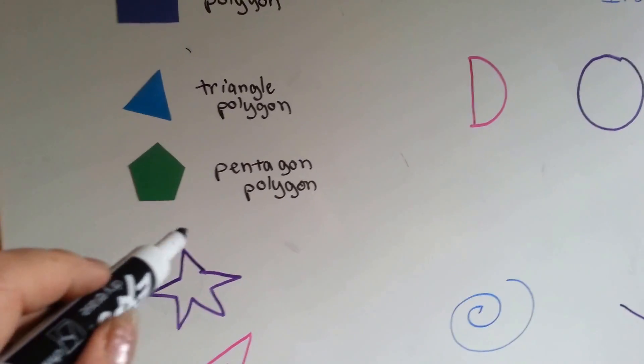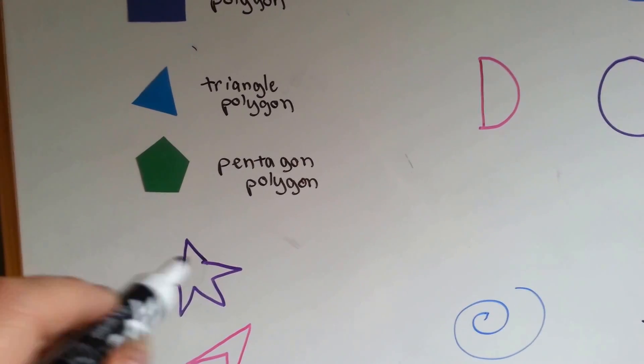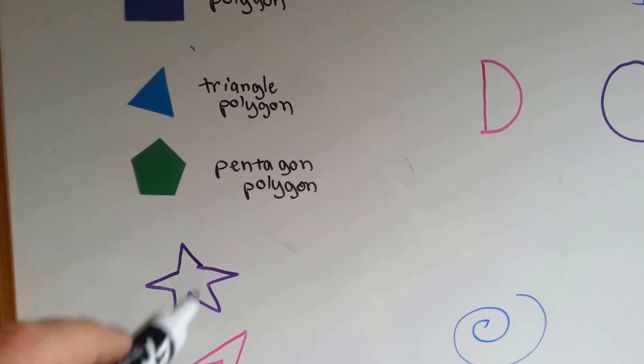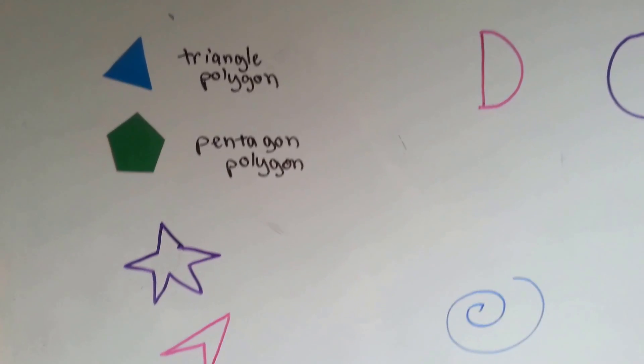How about a star? Its sides are straight. It's closed. You can't get inside like a fence, and it's got sides made out of line segments.